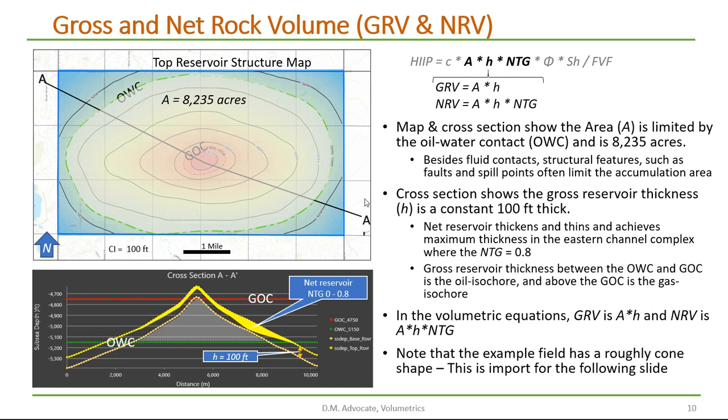Let's take a look at our map and cross section of our example oil field. Looking at the map view we see that our trap is a four way anticline. And we have this oil water contact which limits the area of our accumulation. And we've calculated that as 8,235 acres.